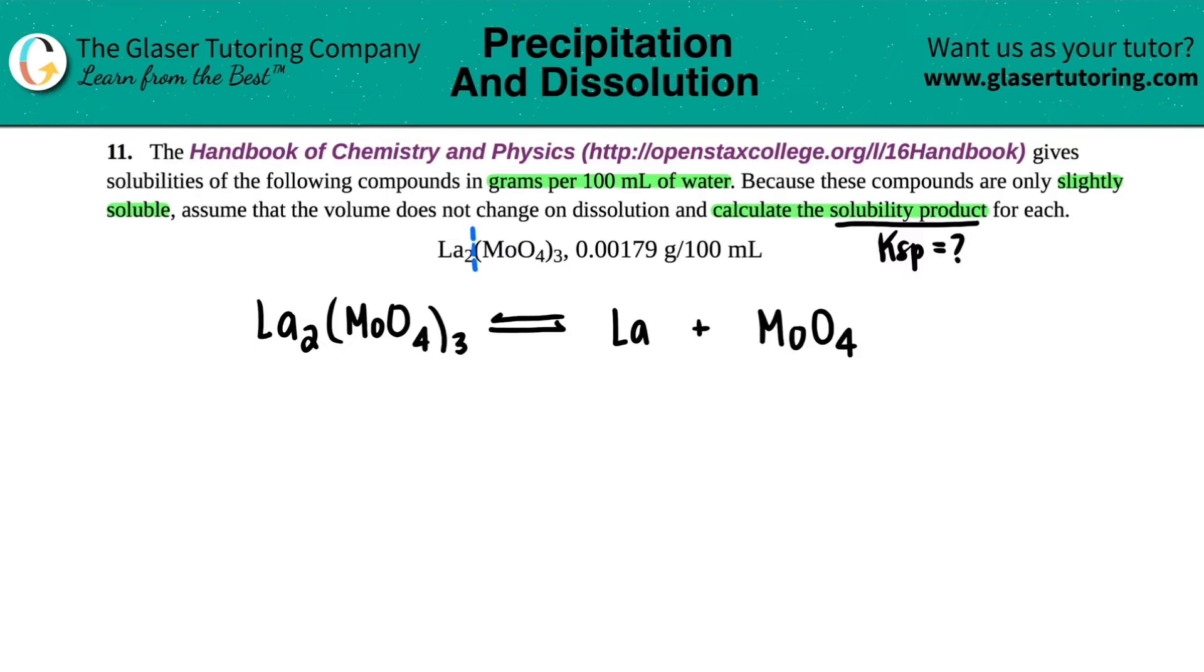Well, that's where we go back to basics to our handy dandy little criss-cross method, where we take the subscripts and criss-cross them back up. There was two Las for every three MoO₄s. So this two criss-crosses up telling us that the MoO₄ had a negative two charge, and the three criss-crosses up telling us that the La had a plus three. So I know that the La has a plus three and the MoO₄ has a negative two. Since we have charges, they're going to be aqueous. And this compound that we're starting with was a solid. The solid dissolves into its ions.